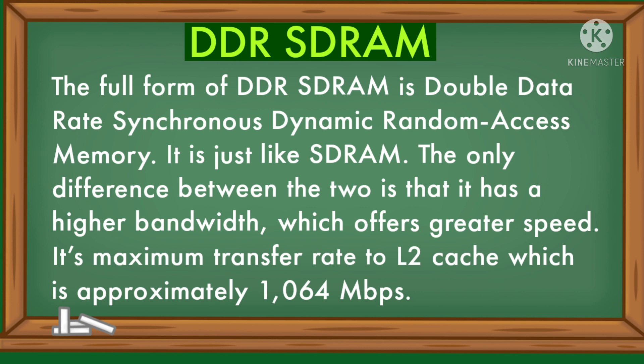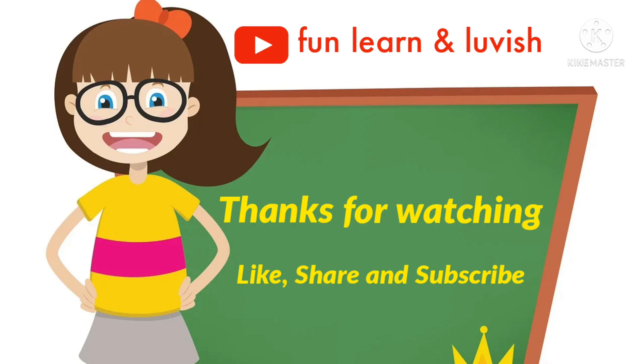DDR SDRAM — Double Data Rate Synchronous Dynamic Random Access Memory — is just like SDRAM. The only difference is that it has a higher bandwidth, which offers greater speed. Its maximum transfer rate to L2 cache is approximately 1064 Mbps. Thanks for watching the video.